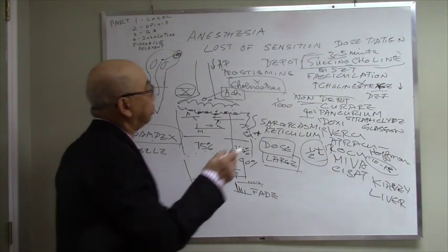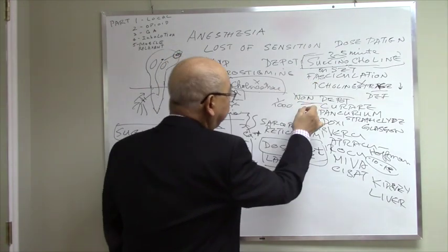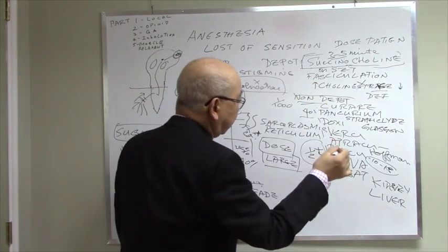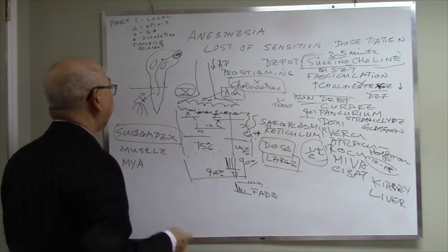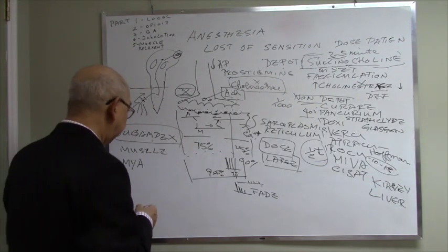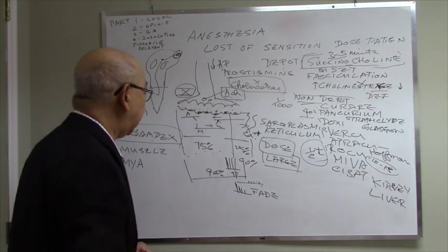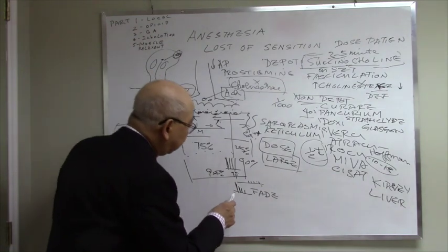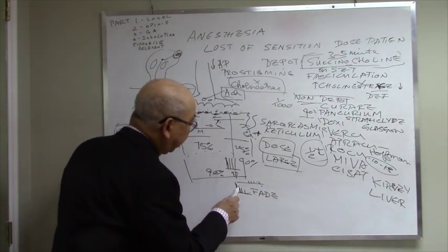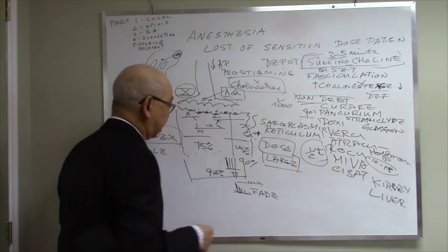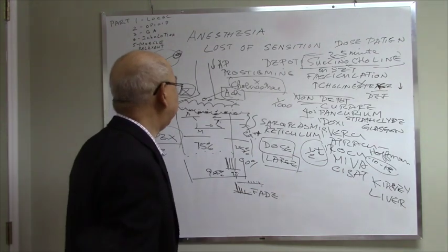So there are two types of muscle relaxants: depolarizing and non-depolarizing. And remember — you can only reverse them when there is fade. If you are fully blocked, it is very difficult to reverse.